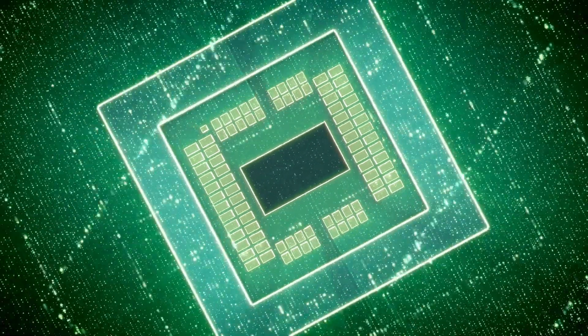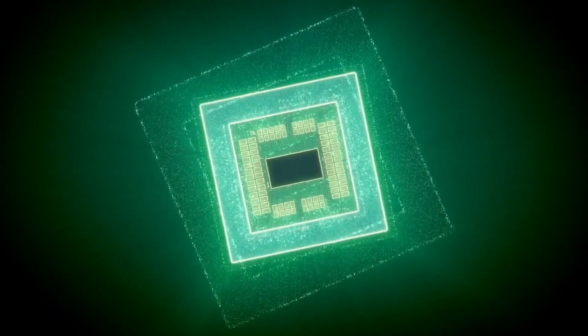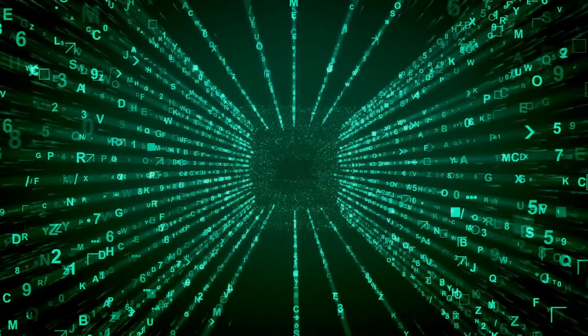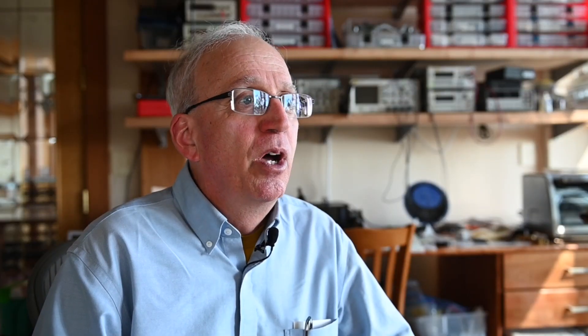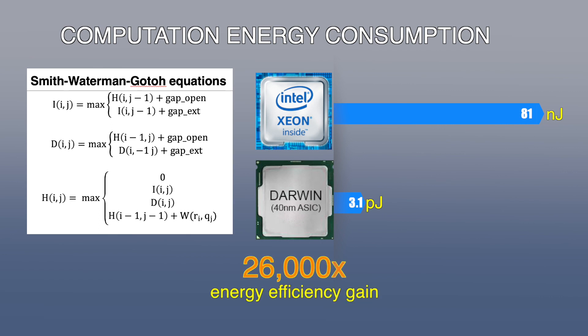A domain-specific accelerator can dramatically improve performance and efficiency way beyond the capabilities of CPUs. In our Darwin accelerator, for example, we get an efficiency gain of 26,000 by replacing a CPU with a little engine that is specialized just to do the dynamic programming that's at the core of bioinformatics algorithms.